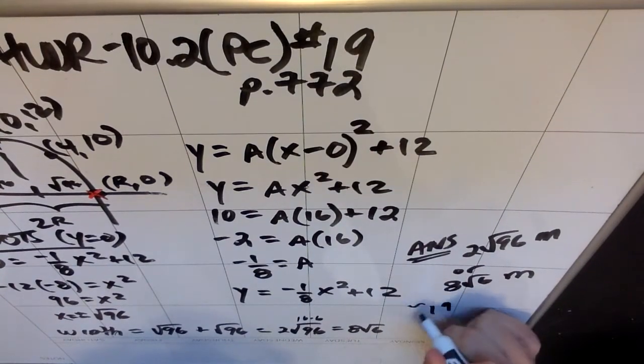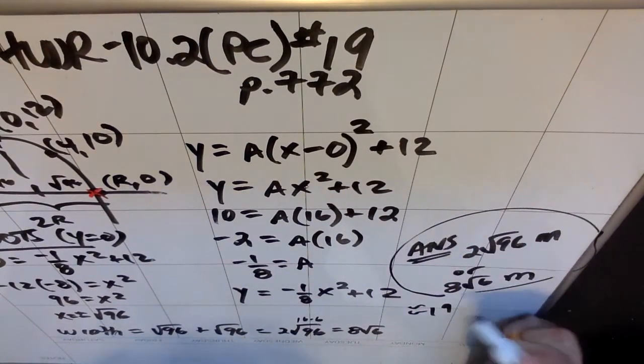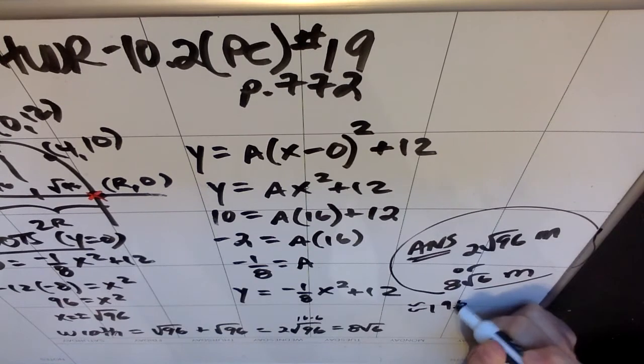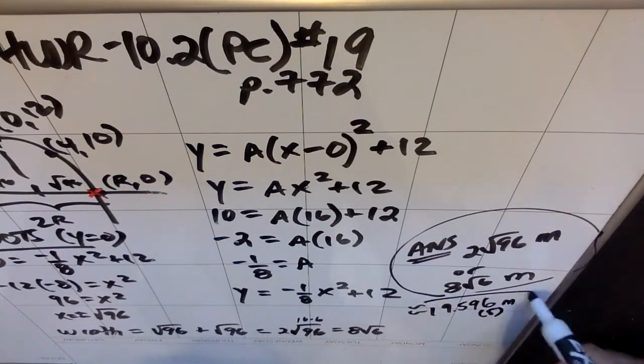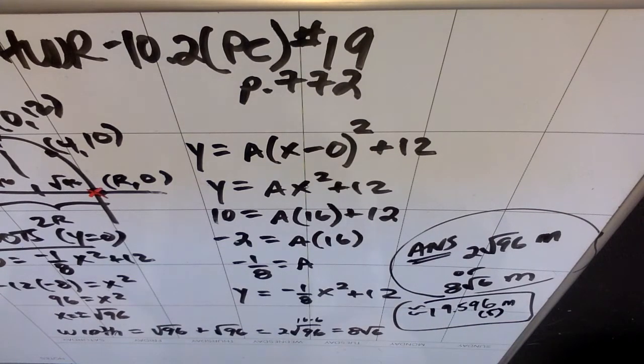So these are both exact answers. An approximate answer would be 19.596 meters, which is also right, or you could say 5 if you truncated instead of rounded. And that's the basic deal.